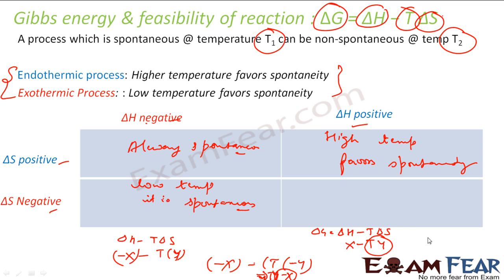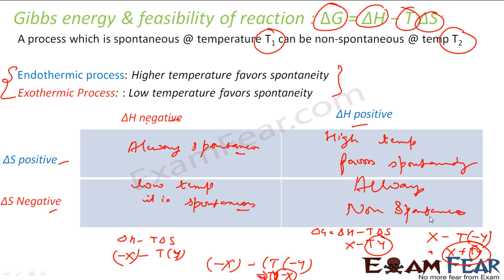Case 4: delta H is positive and delta S is negative. Delta G equals X minus T times (minus Y), which becomes X plus TY. For any value of T this is always greater than zero, so the process is always non-spontaneous. Summary: case 1 is always spontaneous, case 2 is spontaneous at low temperature, case 3 is spontaneous at high temperature, and case 4 is always non-spontaneous.